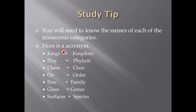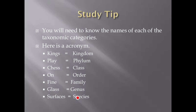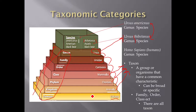Here's a quick thing to help you study, because you are going to need to know the names of each of these taxonomic categories. I use an acronym: kings play chess on fine glass surfaces — Kingdom, Phylum, Class, Order, Family, Genus, Species. This gives you a quick, easy way to memorize all of these individual taxon names that you are going to need to know for your quizzes later on.